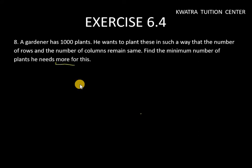The number of rows and number of columns should be the same. Now the minimum number of plants needs more. He wants to say that some plants need to be added. Now in added condition, what we have to do is we need to take long division.